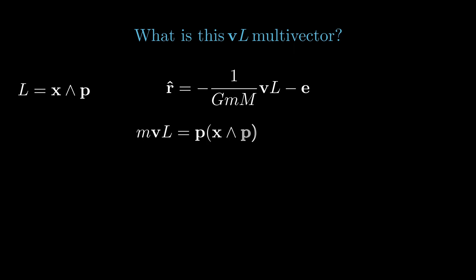We'll start by rewriting vl as mvl so that it becomes momentum times the angular momentum. This is a product that we can then expand. Product of a vector and bivector is the dot product of that vector and that bivector and the wedge product of that vector and the bivector. However, p wedged with p is zero, the tri-vector term is killed. We're left with just the dot product of p with x wedge p. That's a vector.